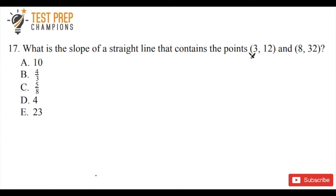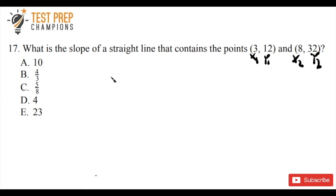So in this coordinate pair, let's call this x1 and y1, and in this pair, x2 and y2. I always highly recommend for students to label whenever you get a question like this — always label the coordinate points: x1, y1, x2, y2. A lot of students don't like to take the time to do that, but oftentimes when they do, it makes way more sense.